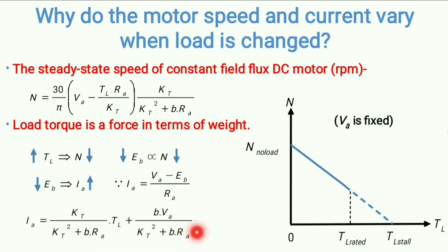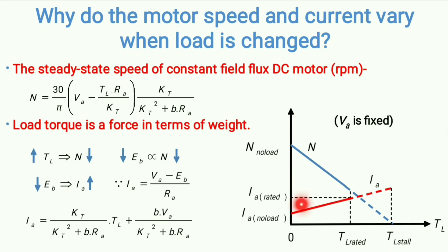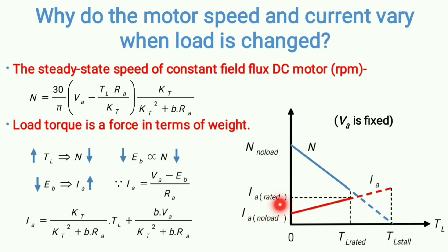So if you increase load torque, armature current also increases — a positive slope straight line. On this graph, the x-axis is load torque and the y-axis is armature current. At no load (TL = 0), you get the no-load current Ia_no-load. As load torque increases, current increases linearly until the rated load torque TL_rated is reached, giving the rated armature current Ia_rated.